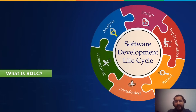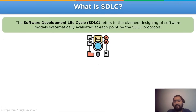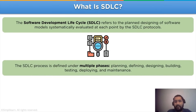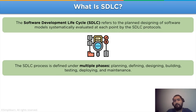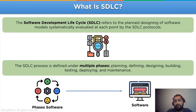The software development lifecycle, or SDLC, refers to the planned designing of software models that are systematically evaluated at each point by different protocols involved in the SDLC phases. The SDLC process is defined using multiple phases that involve different protocols to be acted upon the software development — for example: planning phase, defining, designing phase, building, testing, deploying, and maintenance. These are some of the main phases that lead to the development of a software for the client.